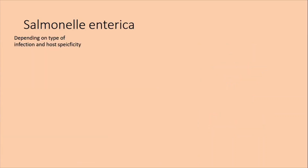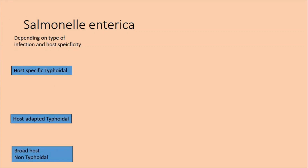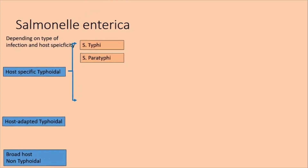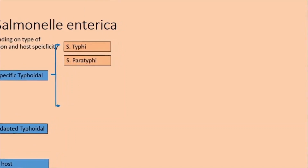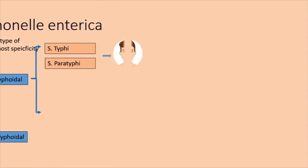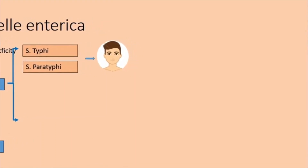Depending upon the type of infection and host species, Salmonella enterica subspecies enterica has been divided into two types — mainly typhoidal and non-typhoidal. Depending upon host specificity, this can again be divided into host-specific typhoidal and host-adapted typhoidal, and the third one is broad-host non-typhoidal. Under host-specific typhoidal comes the typhoidal organisms that affect humans — Salmonella typhi and Salmonella paratyphi — causing typhoid fever and paratyphoid fever respectively, and affecting mainly humans specifically.